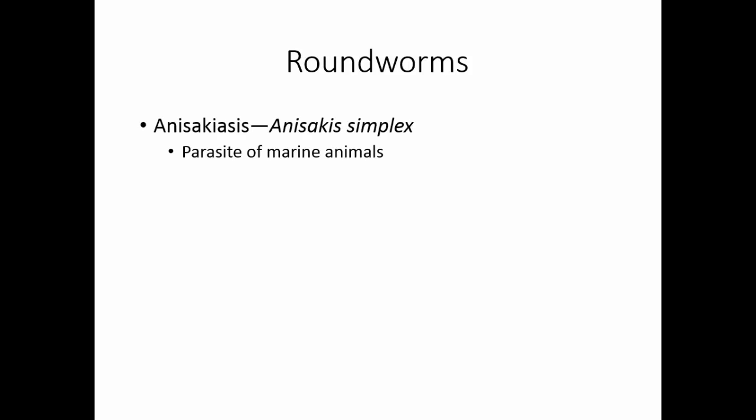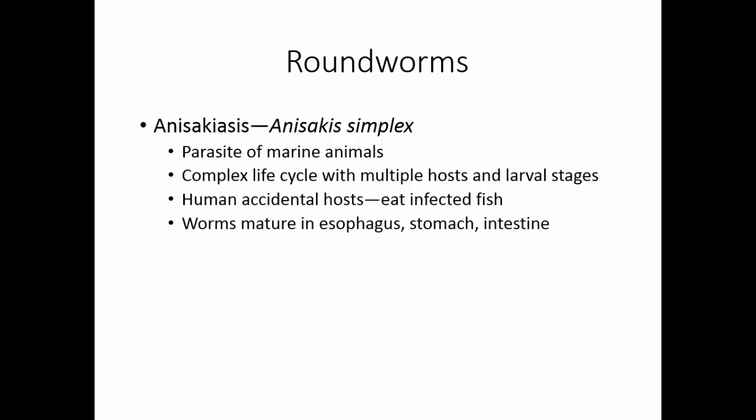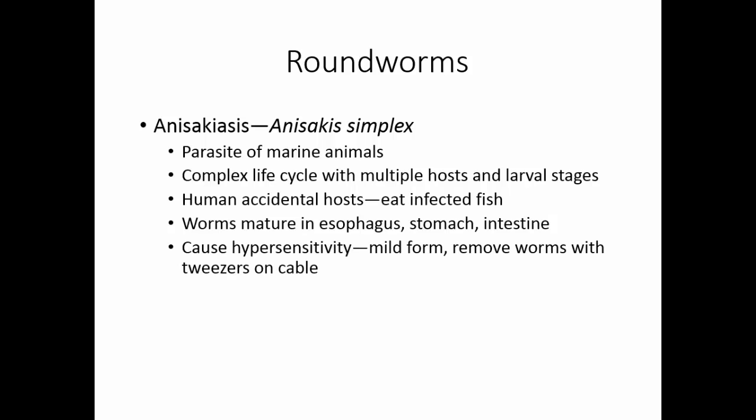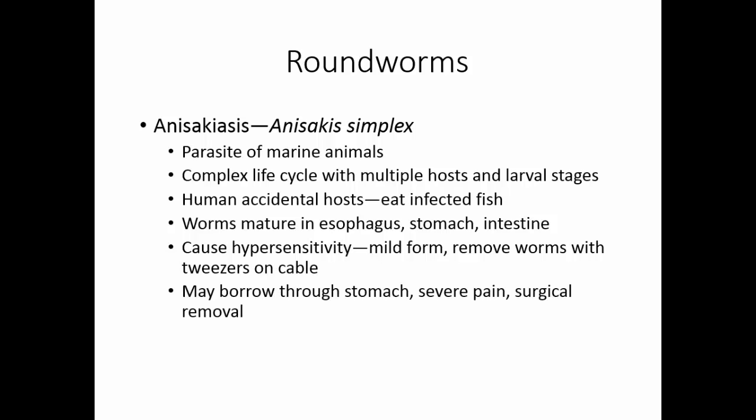Anisakiasis is caused by Anisakis simplex, normally a parasite of marine animals. It has a very complex life cycle with multiple hosts and larval stages, starting as an egg ingested by a marine animal, which is eaten by another, and so on through several fish until dolphins and whales acquire it — it is in these marine mammals that larvae mature into adults. These mammals shed the eggs to restart the cycle. Humans are accidental hosts who eat infected fish. The worms mature in the esophagus, stomach, and intestine, which can cause hypersensitivity in the mild form, and the worms can be removed using an endoscope and tweezers. However, the worms may burrow through the stomach into the peritoneal cavity, causing severe pain and requiring surgical removal. The worms are killed by cooking, so the best prevention is not eating raw fish.